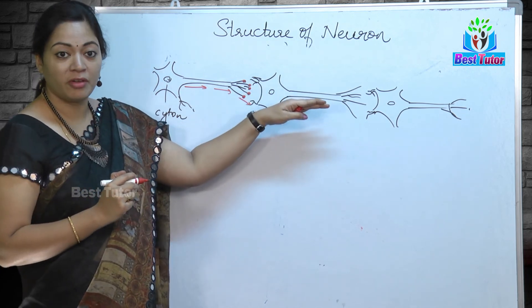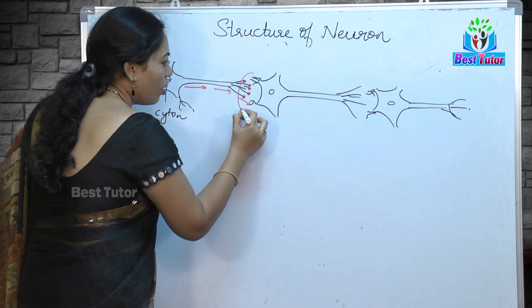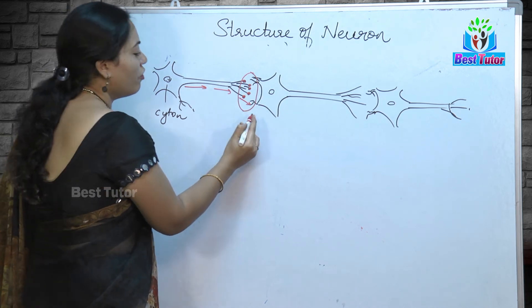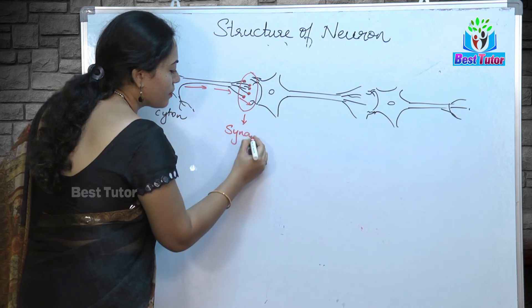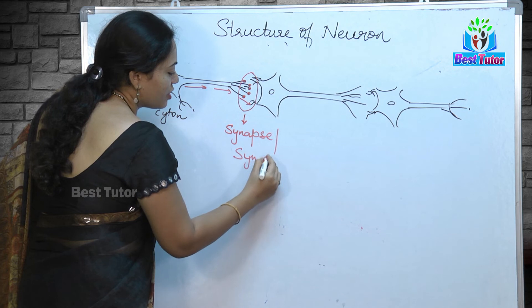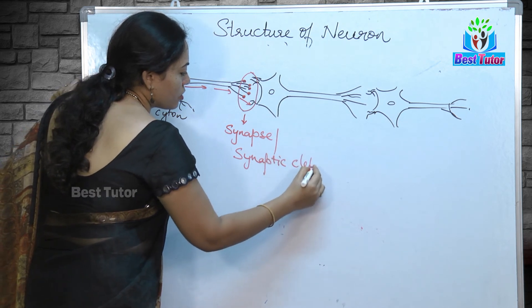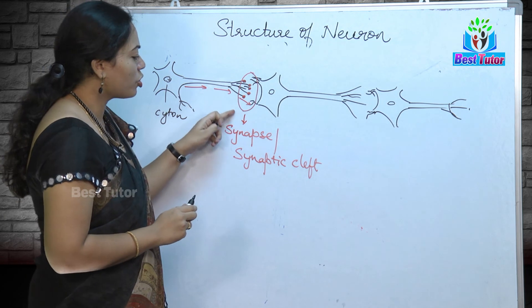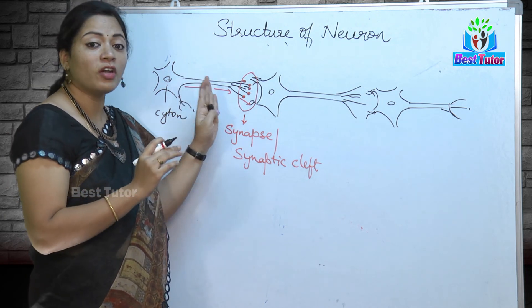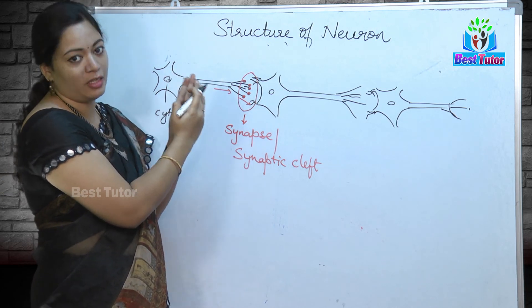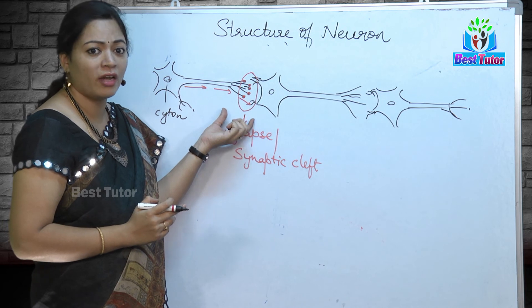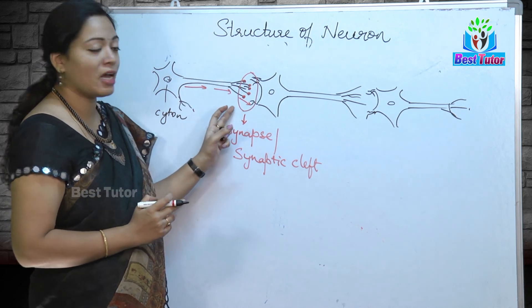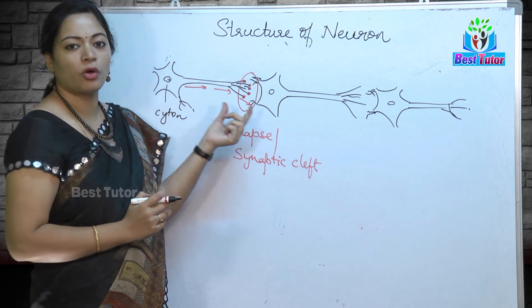The actual gap where the axon endings are closely placed with the dendrites of another neuron is called a synapse or synaptic cleft. The synapse is the junction between the axon endings of one neuron and the dendrites of another, and it allows the transmission of the nerve impulse. This is about the structure of the neuron and how the synapse helps transmission of nerve impulse from one neuron to another. Thank you.